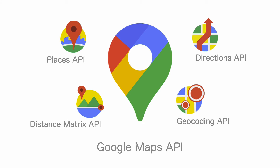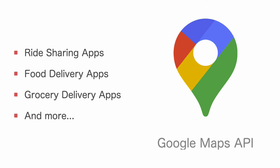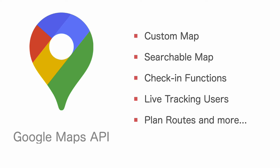So why learn Google Maps API? Google Maps API is a reliable and robust tool and it's the number one choice amongst companies when it comes to building location-based applications such as ride-sharing apps, food delivery apps, grocery delivery apps, and so on. You can build pretty much any type of location-based application that has features like a custom map, searchable map, check-in functions, and live tracking users.